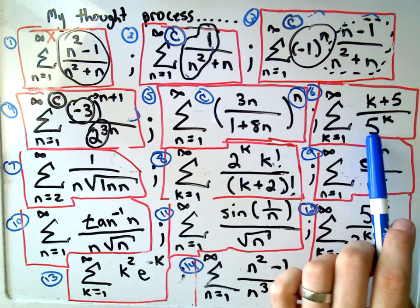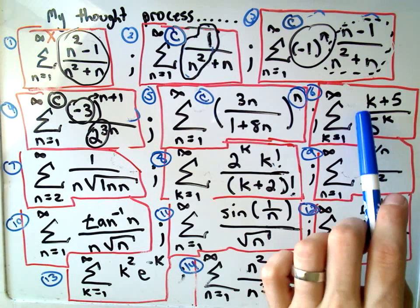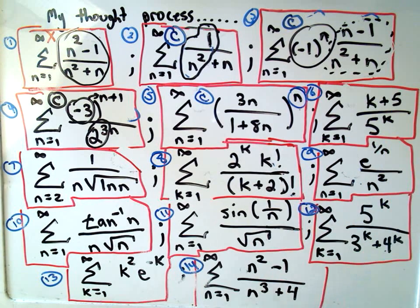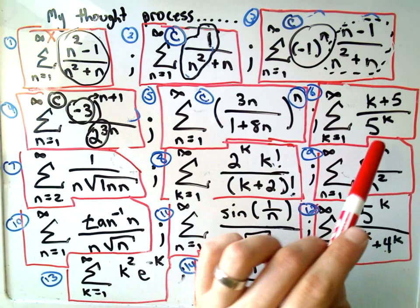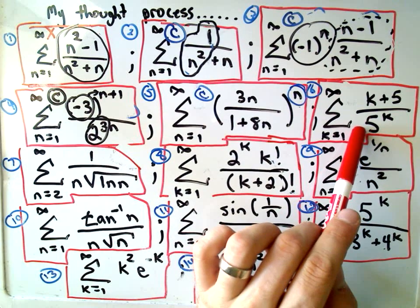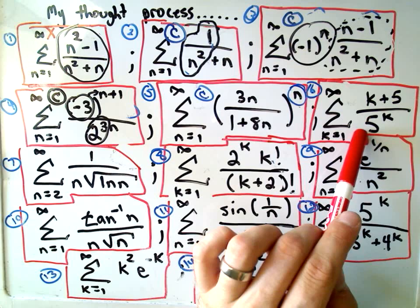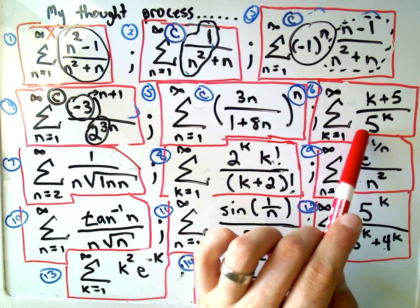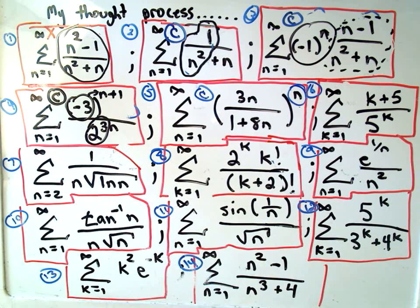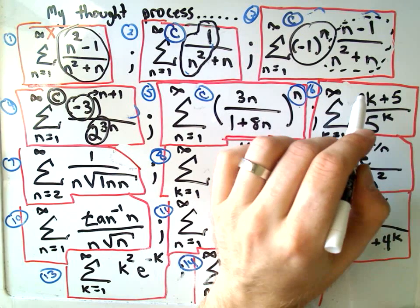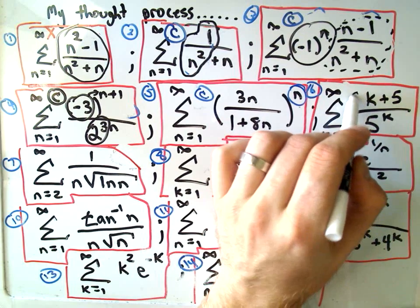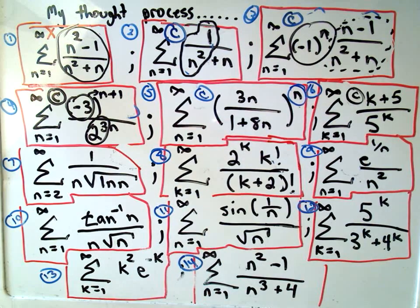Number six, k plus 5 over 5 to the k. If you take the limit of this, you would get infinity over infinity. You could use L'Hopital's rule to show that the limit is zero. So anything could happen. Again, it could converge or diverge. But I think a lot of times if you have exponential functions like 5 to the k, a good trick is to use the ratio test. And I think if we use the ratio test in this case, you can actually show that number six would, in fact, converge as well. Again, I haven't worked any of these out, so forgive me if I'm mistaken.